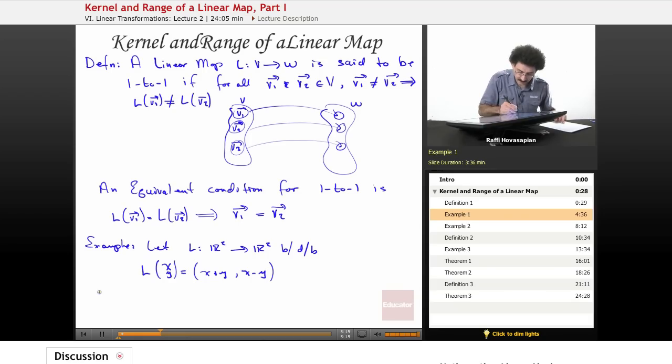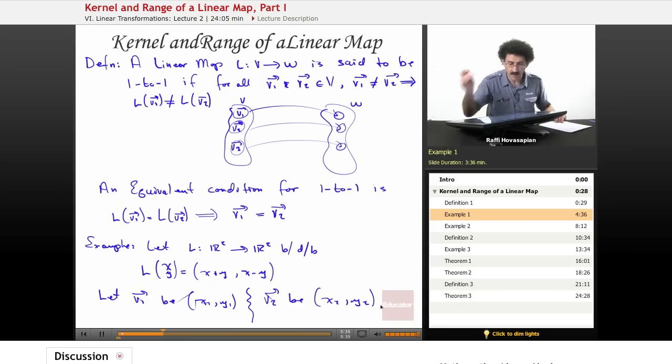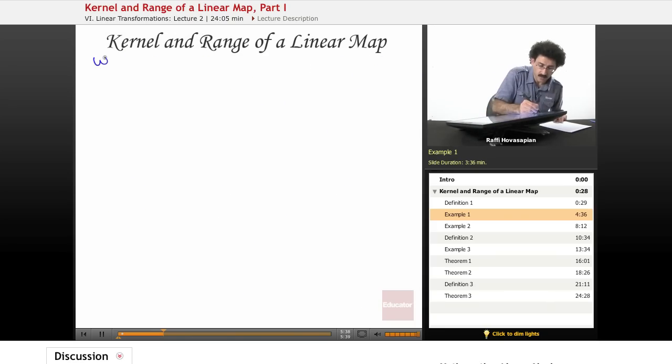We will let V1 be (x1, y1), we'll let V2 be (x2, y2). We want to show, I'm going to use the second formulation, L(V1) equals L(V2) implies that V1 equals V2, so we're trying to show that it's one-to-one and we're going to use this alternate condition.